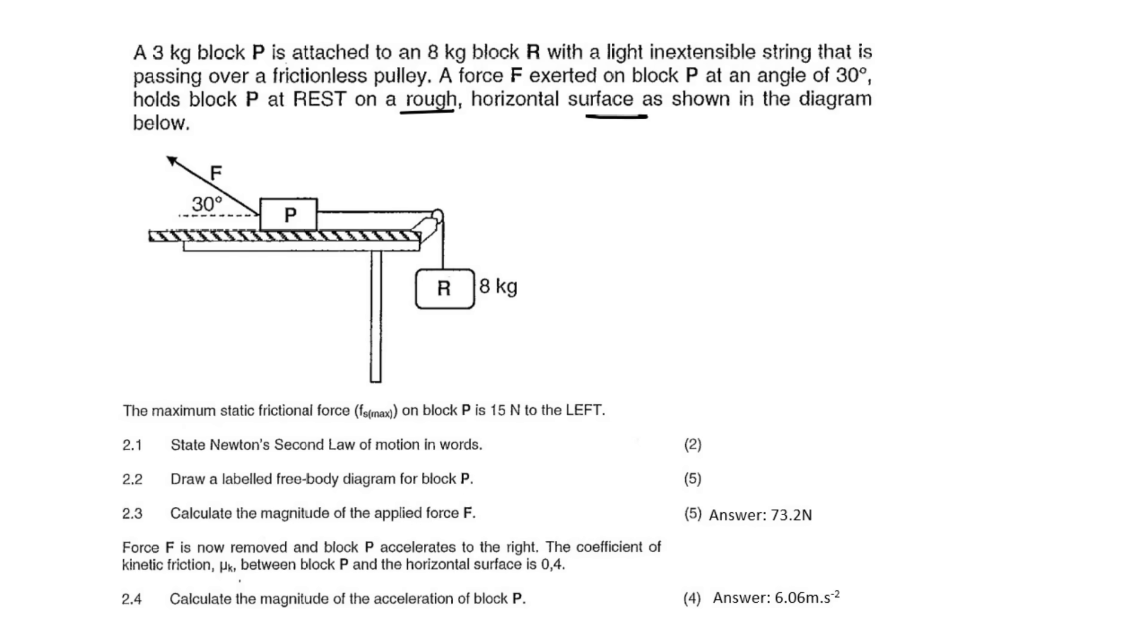They tell us that the maximum friction on block P is acting to the left. That's important. So the friction acting on block P is going this way. So then what does that mean? It means that block P is trying to go to the right, and that's why the friction is acting to the left. Because remember, the friction always acts in the opposite direction that the block is trying to move. So the system is trying to go in that direction. That's important.